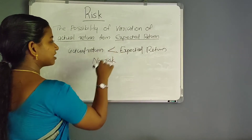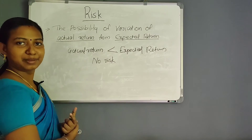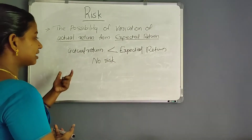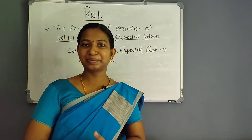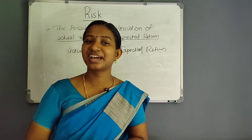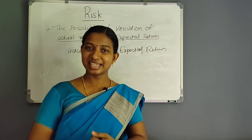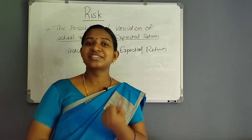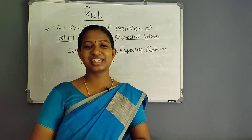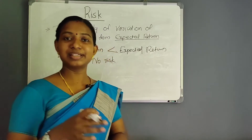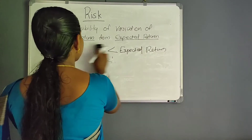If the actual return equals the expected return, we don't have risk. What is the meaning of risk? Risk is the possibility of variation in actual return from expected return. This is clear. If we have another level of risk, we have a classification.